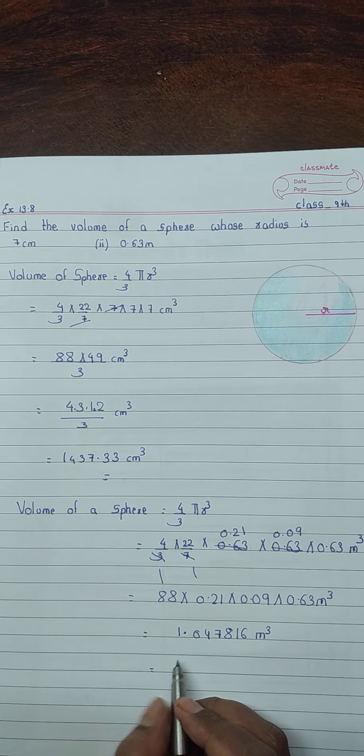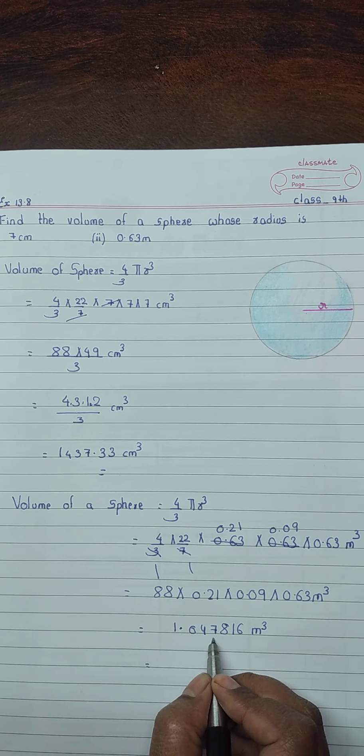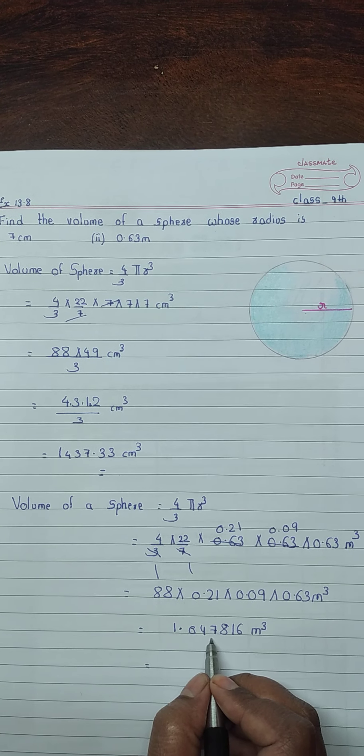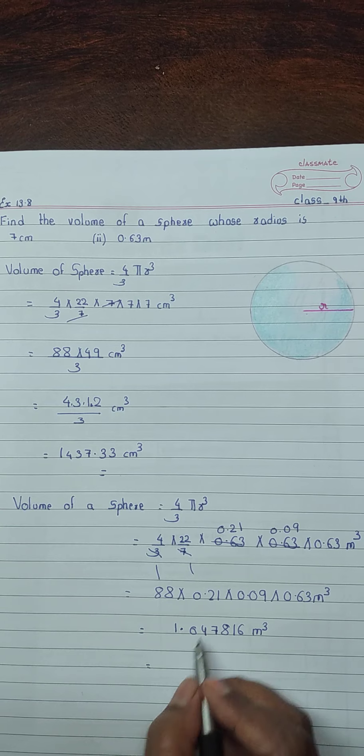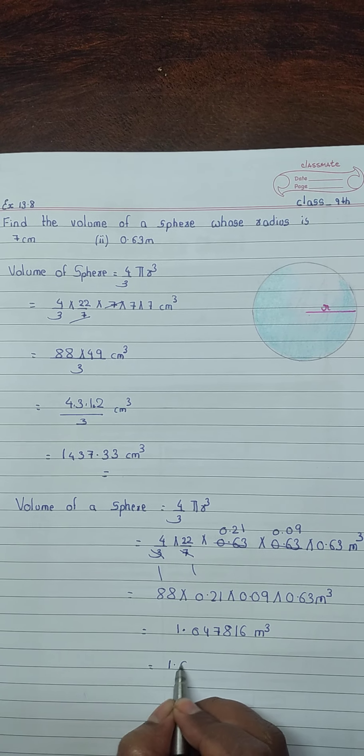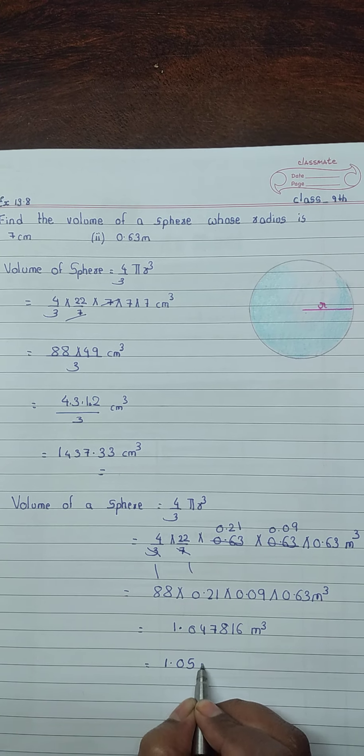We'll round it off. 7 is nearer to 10, therefore this 4 will become 5. 1.05 meter cube.